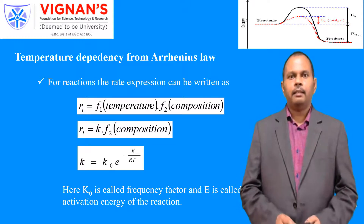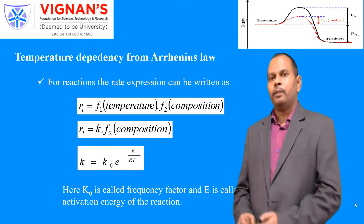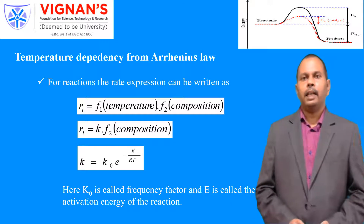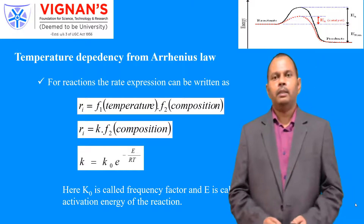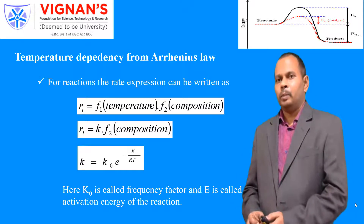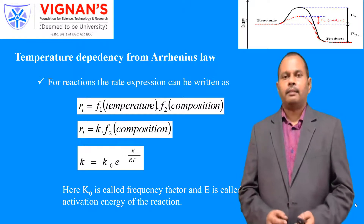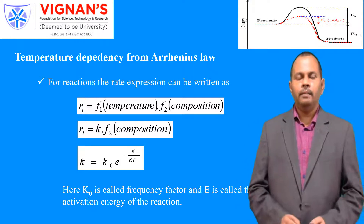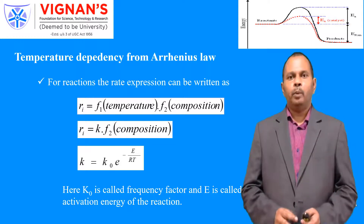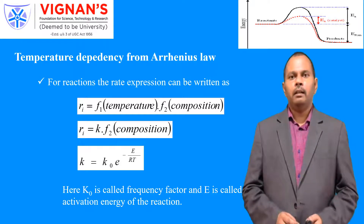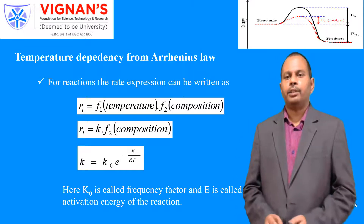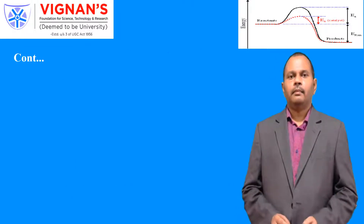The frequency factor K₀ tells about the number of collisions between the reactive molecules. E is the activation energy — the minimum amount of energy required for the reactive molecules to produce the desired products. R is the universal gas constant with a value of 8.314 J/mol·K, and T is the reaction temperature.